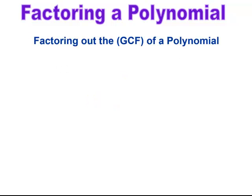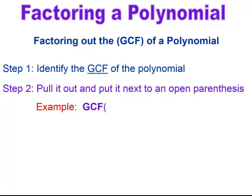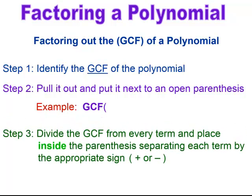When factoring out the GCF of a polynomial, first find the GCF using the stepping process. Once you know the GCF, pull it out and place it next to an open parenthesis. Then find what goes inside the parenthesis by dividing every term by the GCF, placing what's left inside and separating each term by the appropriate sign — plus or minus.